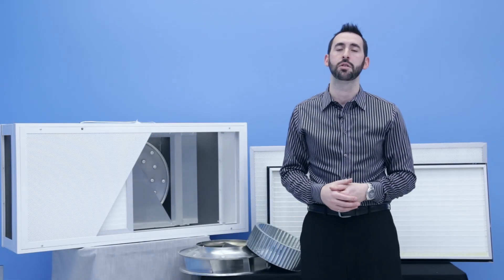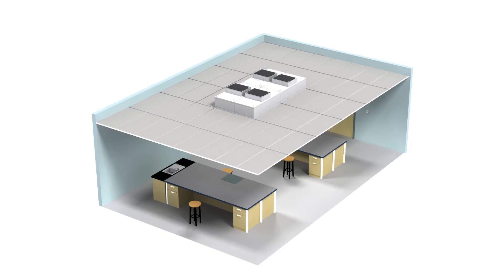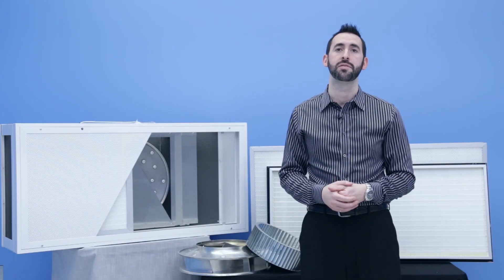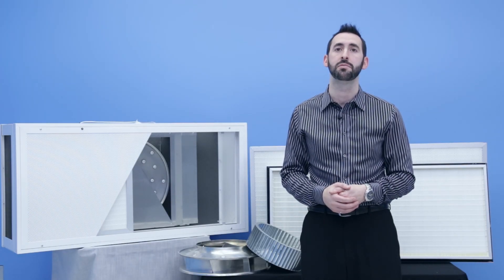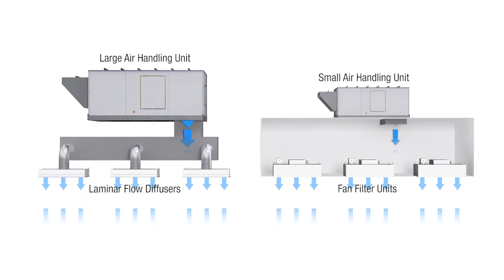FFUs can also be used to quickly and easily upgrade the ISO classification of rooms simply by adding fan filter units to the ceiling. It is common for ISO class 1-5 clean rooms for the entire ceiling to be covered in fan filter units. By using FFUs instead of a central air handler to provide the required air changes, the size of the air handler can be greatly reduced.